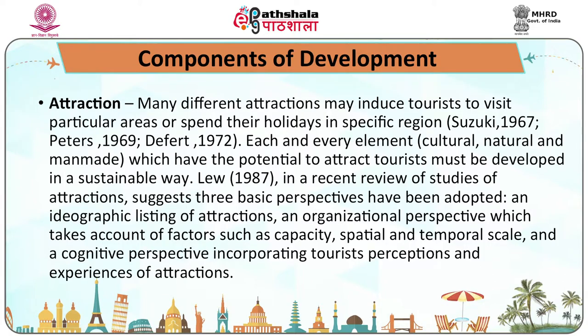There are four components of tourism product development. Attractions: many different attractions may induce tourists to visit particular areas or spend their holidays in specific regions. Each and every element — cultural, natural, and man-made — which has the potential to attract tourists must be developed in a sustainable way. Studies suggest three basic perspectives: an ideographic listing of attractions, an organizational perspective accounting for capacities and temporal scale, and a cognitive perspective incorporating tourist perceptions and experiences.